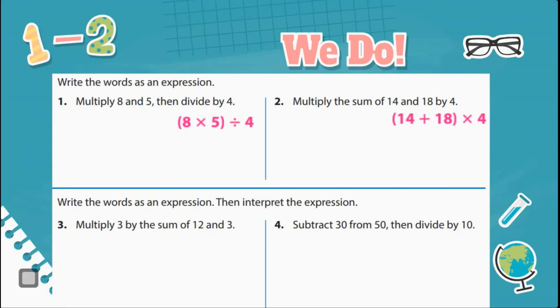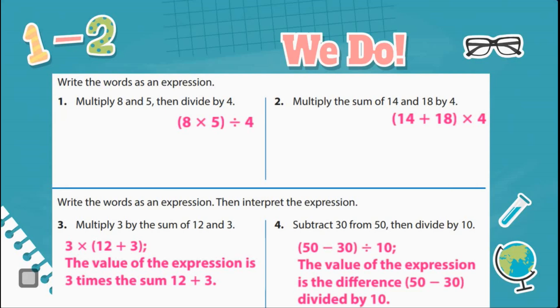To recap, we have number 3. We multiply 3 by the sum of 12 and 3. So 3 times 12 plus 3. It says the value of the expression is 3 times the sum, 12 plus 3. Number 4. Subtract 30 from 50. Then divide by 10. So we're doing exactly what it says here. 50 minus 30 divided by 10. The value of the expression is the difference, 50 minus 30 divided by 10.